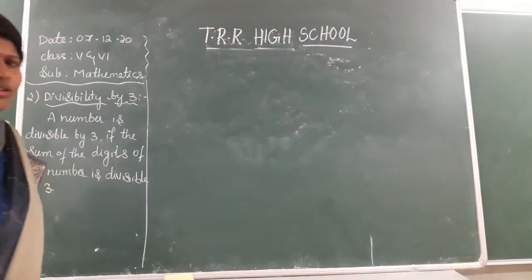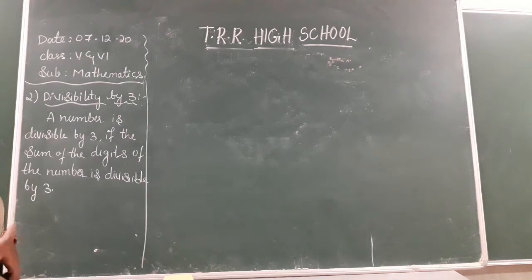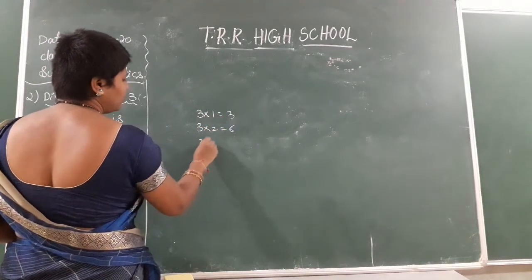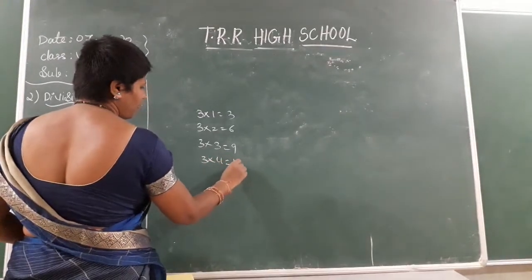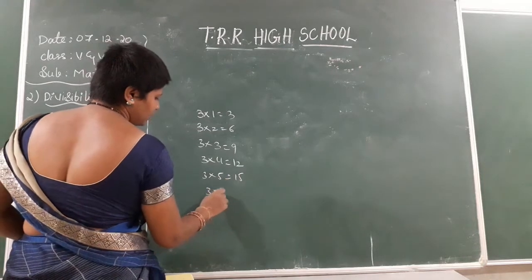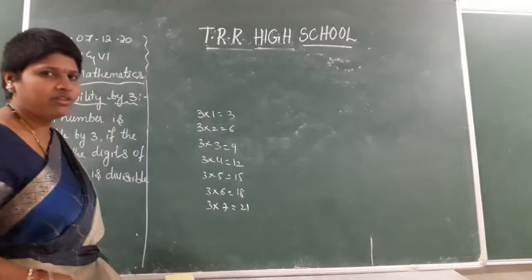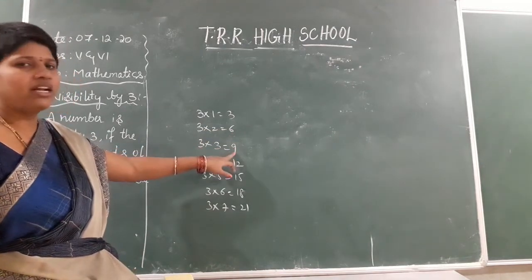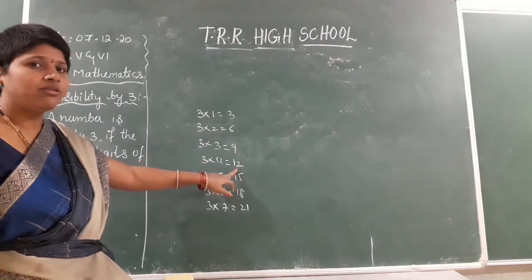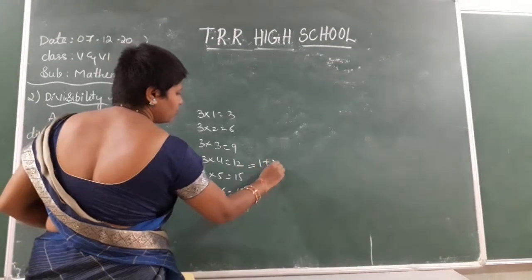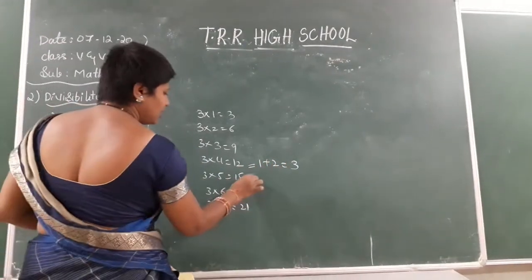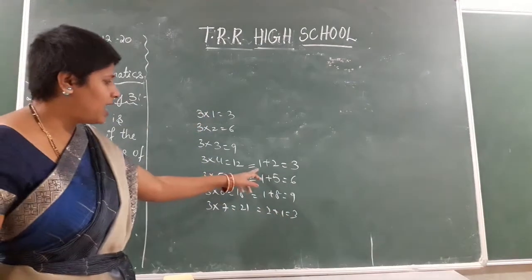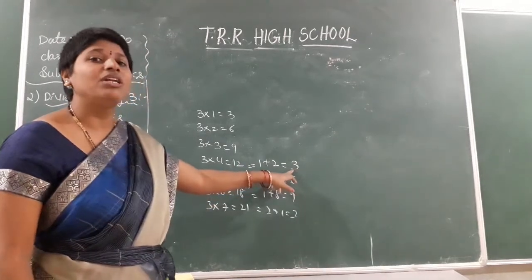Sum of the digits means you add the individual digits of a number. Consider the 3 times table: 3, 6, 9, 12, 15, 18, 21... For 12, add 1+2=3, and 3 is divisible by 3. For 15, 1+5=6, divisible by 3. For 18, 1+8=9, divisible by 3. For 21, 2+1=3, divisible by 3. So when you add the digits of a number and the sum is divisible by 3, the number itself is divisible by 3.